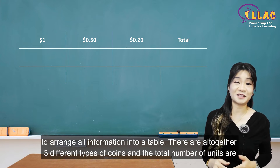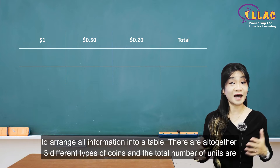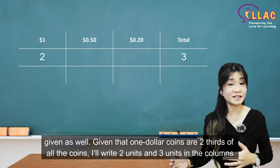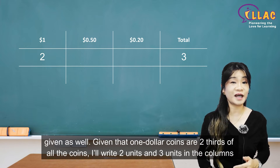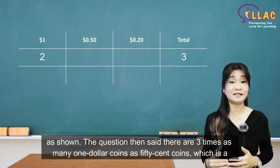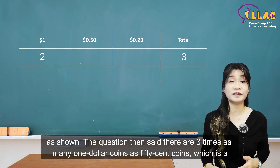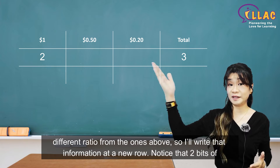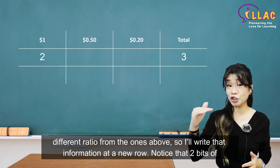There are altogether three different types of coins and the total number of units are given as well. Given that $1 coins are two-thirds of all the coins, I'll write 2 units and 3 units in the columns as shown. The question then says there are three times as many $1 coins as $0.50 coins, which is a different ratio from the ones above, so I'll write that information in a new row.